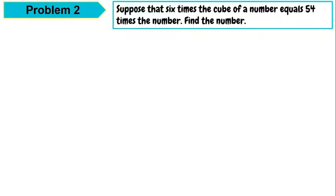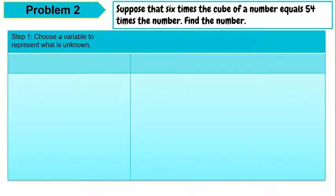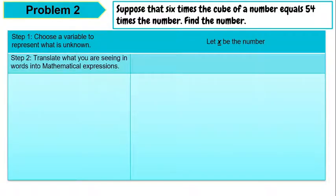Let's have problem number 2. Suppose that 6 times the cube of a number equals 54 times the number. Find the number. For step 1, let x be the number. Translating into a mathematical expression: 6 times the cube of a number is 6x cubed, equals 54 times the number, which is 54x.